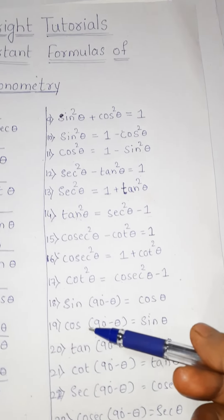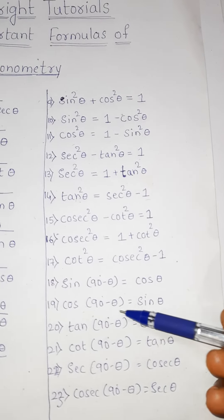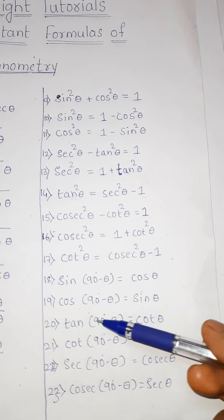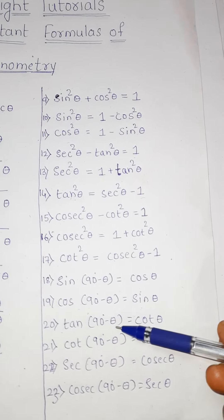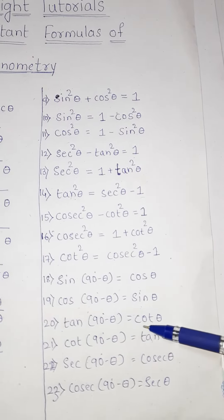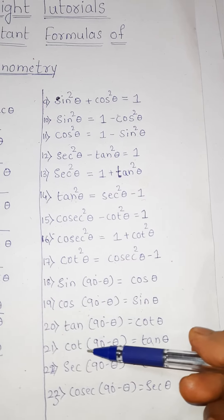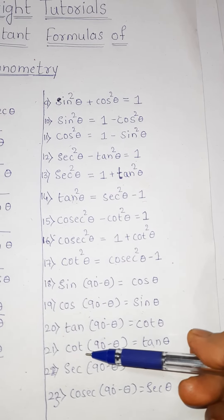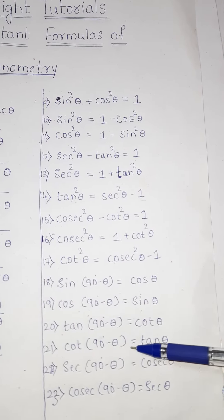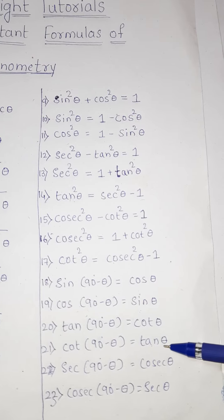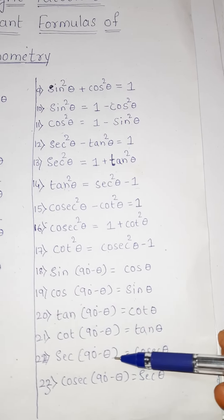Nineteenth one: cos(90 degree minus theta) is equal to sin theta. Twentieth one: tan(90 degree minus theta) is equal to cot theta. Twenty-first one: cot(90 degree minus theta) is equal to tan theta.